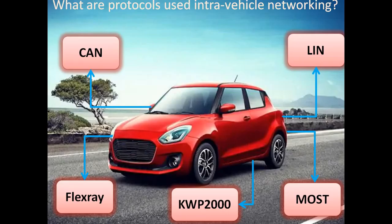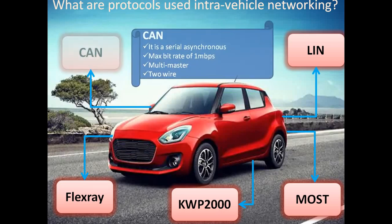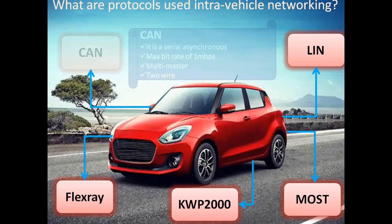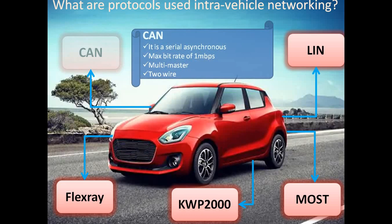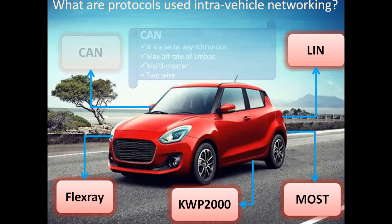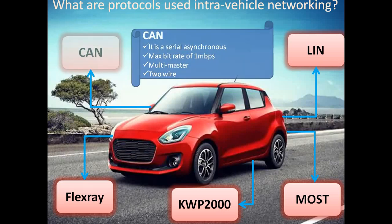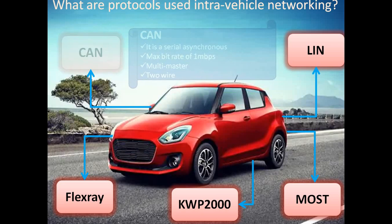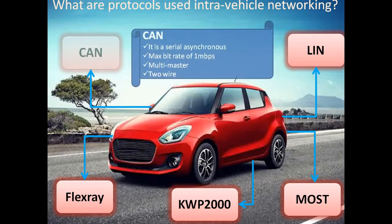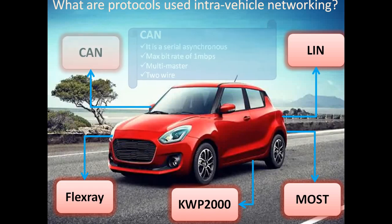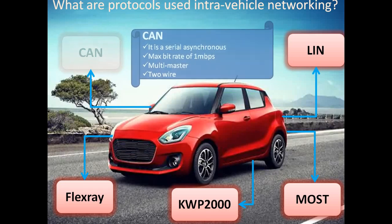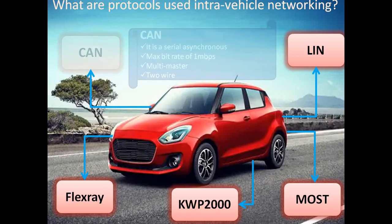CAN, or Controller Area Network, was developed by Bosch. It is a serial asynchronous communication protocol with a maximum bit rate of 1 Mbps, though the industry typically uses around 500 Kbps. It is a multi-master protocol using just two wires, allowing multiple ECUs to connect on the same network, and it is a very robust communication protocol widely used in almost every vehicle.